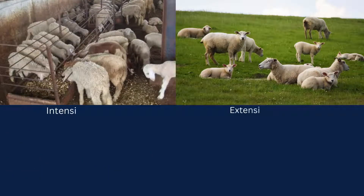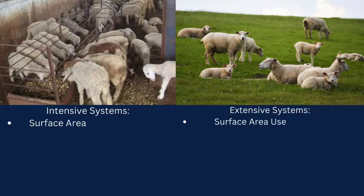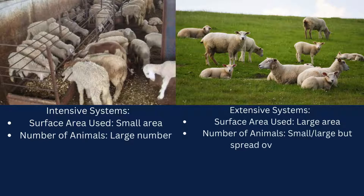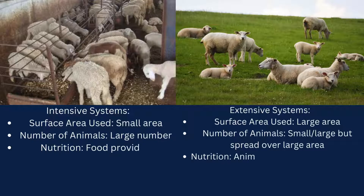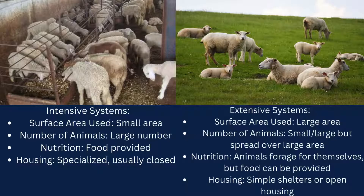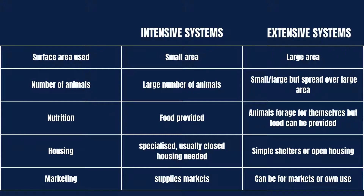I have created a table for you that looks into these particular systems. To help you understand and remember this easily, I've divided it into five subheadings: surface area, number of animals, nutrition, housing, and marketing. In terms of surface area, intensive systems cover small areas of land, whereas extensive systems cover large areas.